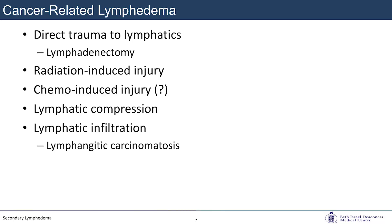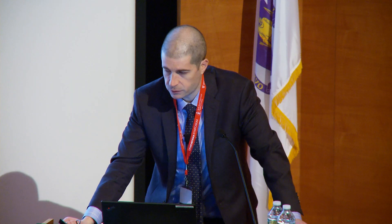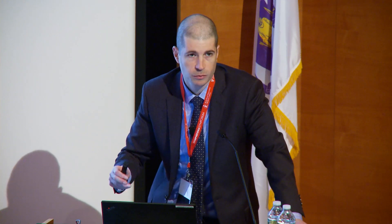There are multiple mechanisms: direct trauma to the lymphatics from lymphadenectomy — the removal of lymph nodes or destruction of lymphatic vessels — radiation-induced injury, and a question about the role of chemotherapy-induced injury. There can also be a direct effect on lymphatics from the cancer itself, including lymphatic compression and lymphatic infiltration. One of the most serious cases of breast cancer-related lymphedema I've seen was rapidly progressive in someone with metastatic disease that had infiltrated into the lymphatic system — there's really no way to combat that.